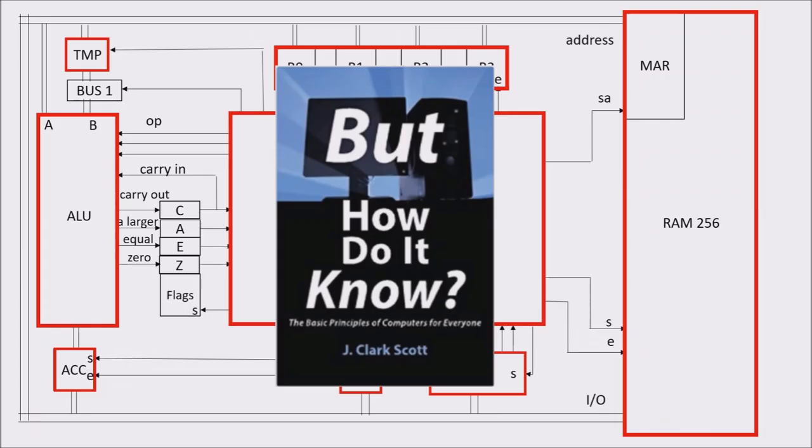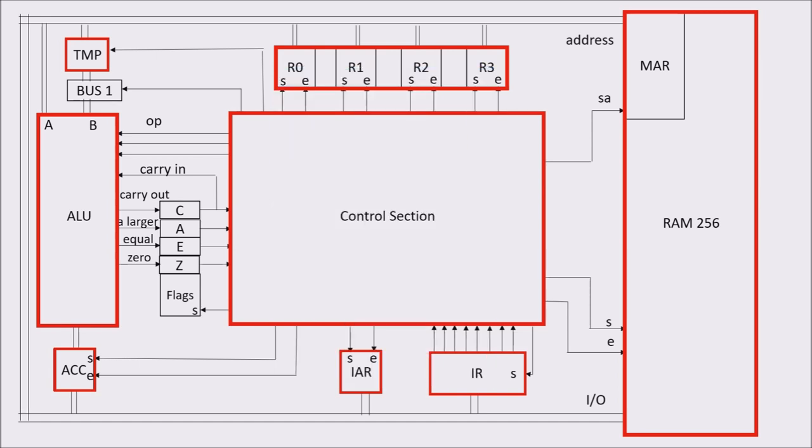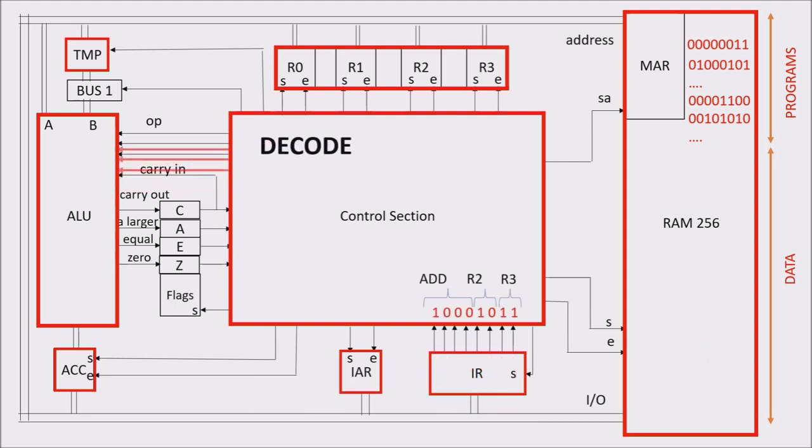Our example is always taken from the fantastic But How Do It Know? by John Clark Scott. In previous videos we have seen that all the CPU does is executing instructions taken from the RAM. It is always the same process which repeats itself over and over.